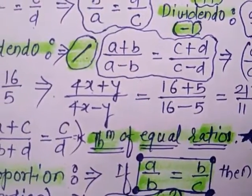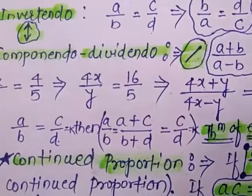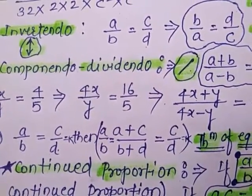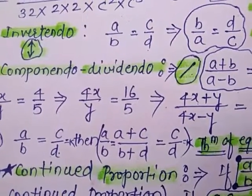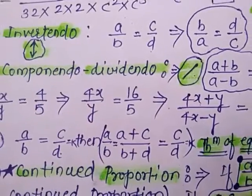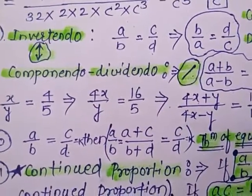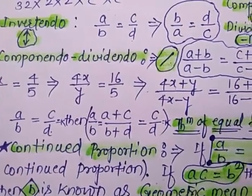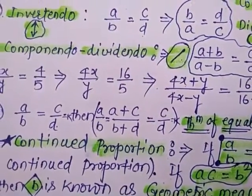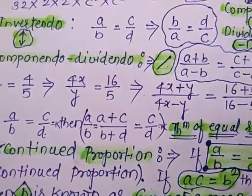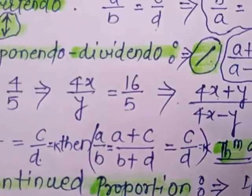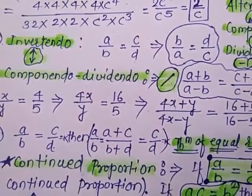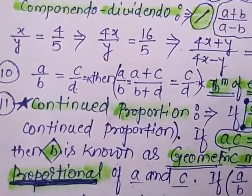Now, theorems for equal ratios. If A/B is equal to C/D, equal to a constant, then A/B is equal to (A+C)/(B+D), equal to C/D. This indicates that we can add or subtract equal ratios from both numerator and denominator, and the value will remain the same.